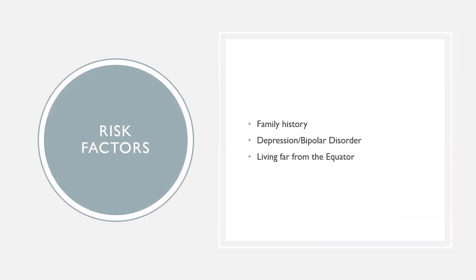Seasonal affective disorder is diagnosed more often in women than in men, and SAD occurs more frequently in younger adults than in older adults. Other risk factors that may increase your risk include family history, having major depression or bipolar disorder, because symptoms of depression may worsen seasonally if you have one of these conditions, and also living far from the equator. SAD appears to be more common among people who live far north or south of the equator, due to decreased sunlight in winter and longer days in summer.